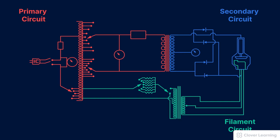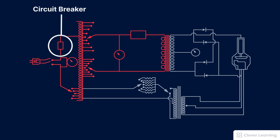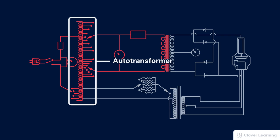The primary circuit receives the main power supply, and it also contains several components related to the voltage. The primary circuit includes the circuit breaker, which helps to protect the machine. The primary circuit also includes the auto transformer that we use to select the desired KVP.